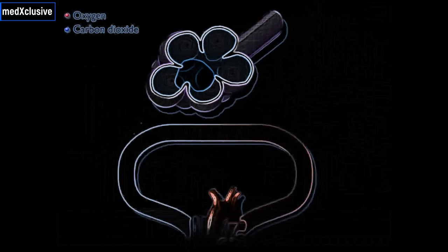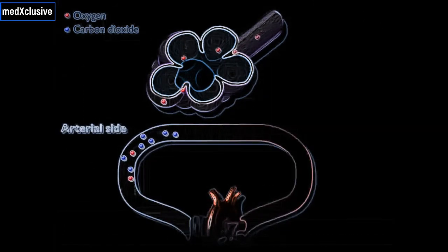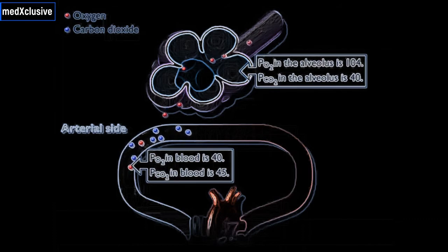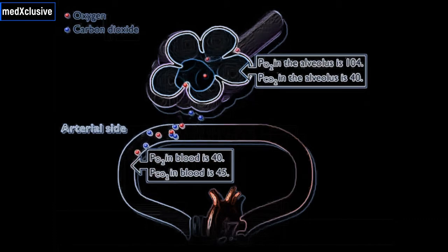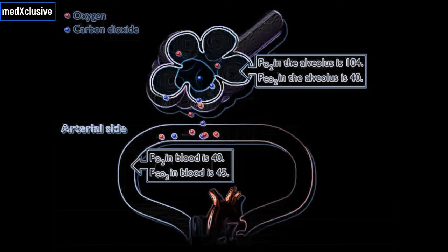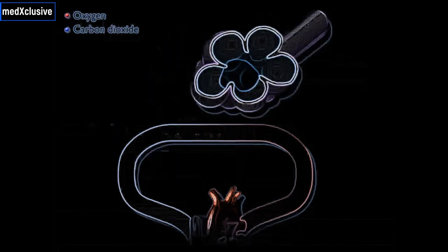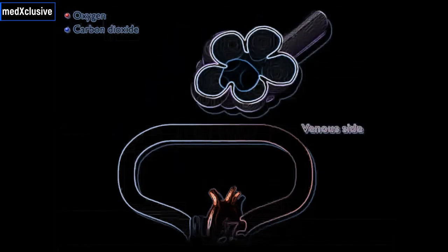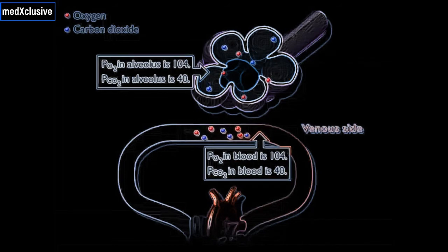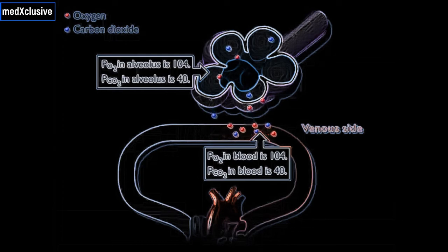Blood coming from the heart at the arterial ends of the pulmonary capillaries has a partial pressure of oxygen or PO2 of 40 and a PCO2 of 45. Therefore, oxygen diffuses from the air in the alveoli into the blood and carbon dioxide diffuses from the blood into the alveoli because of these differences in partial pressures. Oxygen and carbon dioxide diffuse until there is no difference in partial pressure in the air and the blood. At this point, there is no more net movement of O2 or CO2.